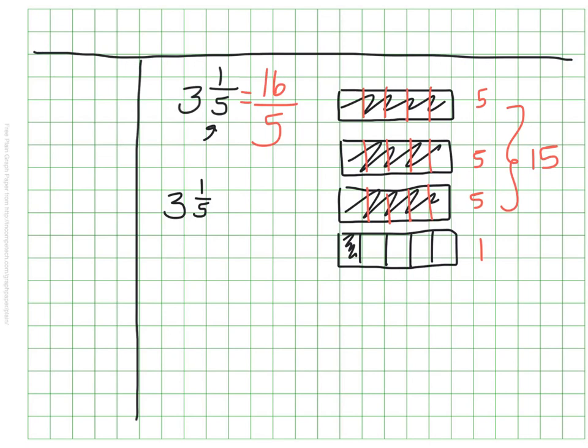So there were three wholes. They each had fifths. We ended up doing three groups of 5. We did 5 times 3 or 3 times 5. So I take my denominator and multiply it by the number of wholes there are. Then I take that amount and I add the numerator to it. I kind of think about it as working around in a circle.